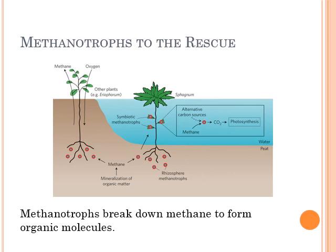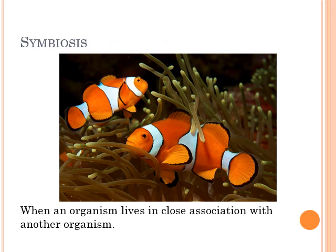On the other side, you have methanotrophs — they take methane out of the environment and fix it into organic molecules. So whenever something is being produced, you'll have something that consumes it, and they exist in a balance. It's only when they get out of balance that you end up having major ecological consequences.